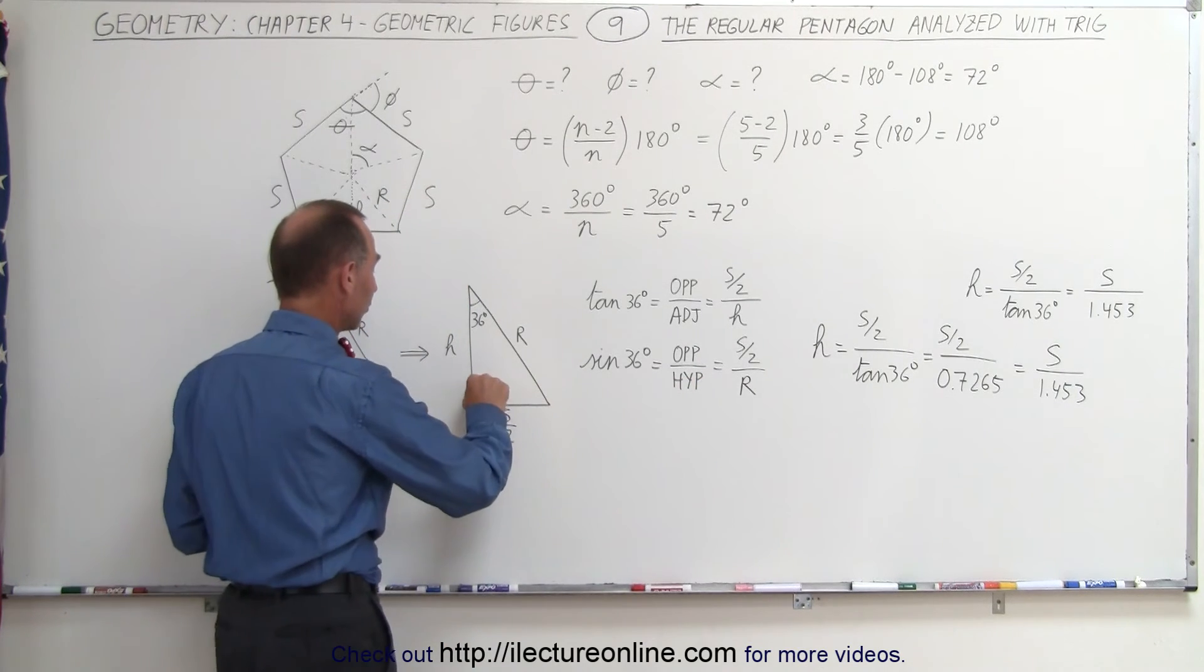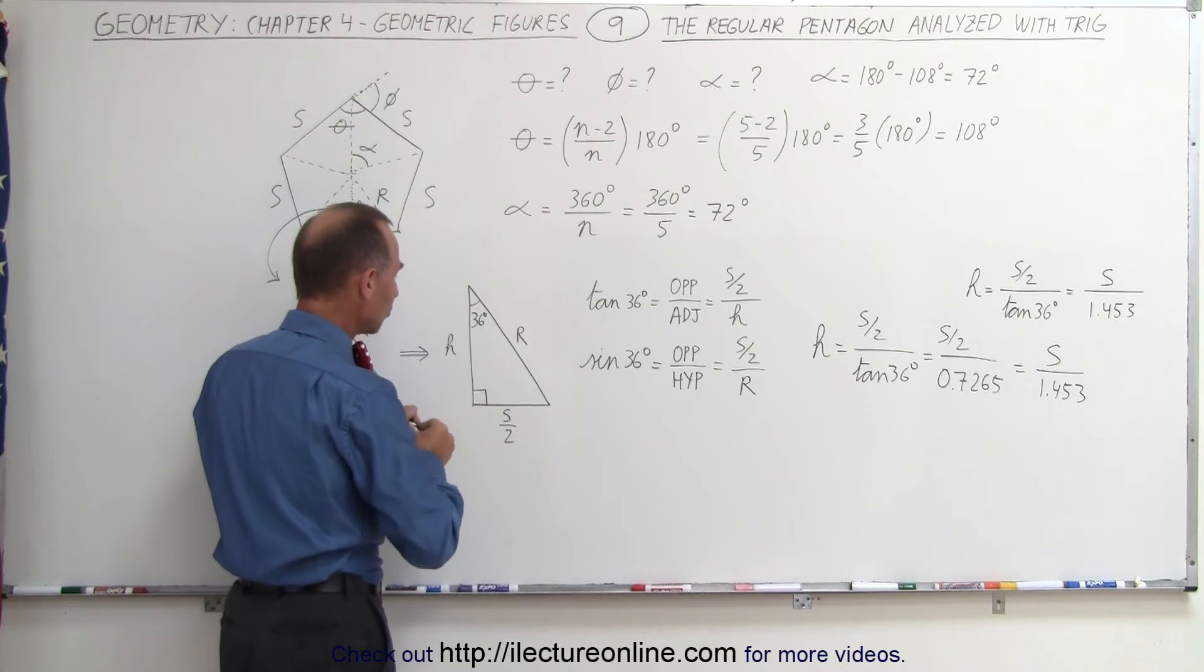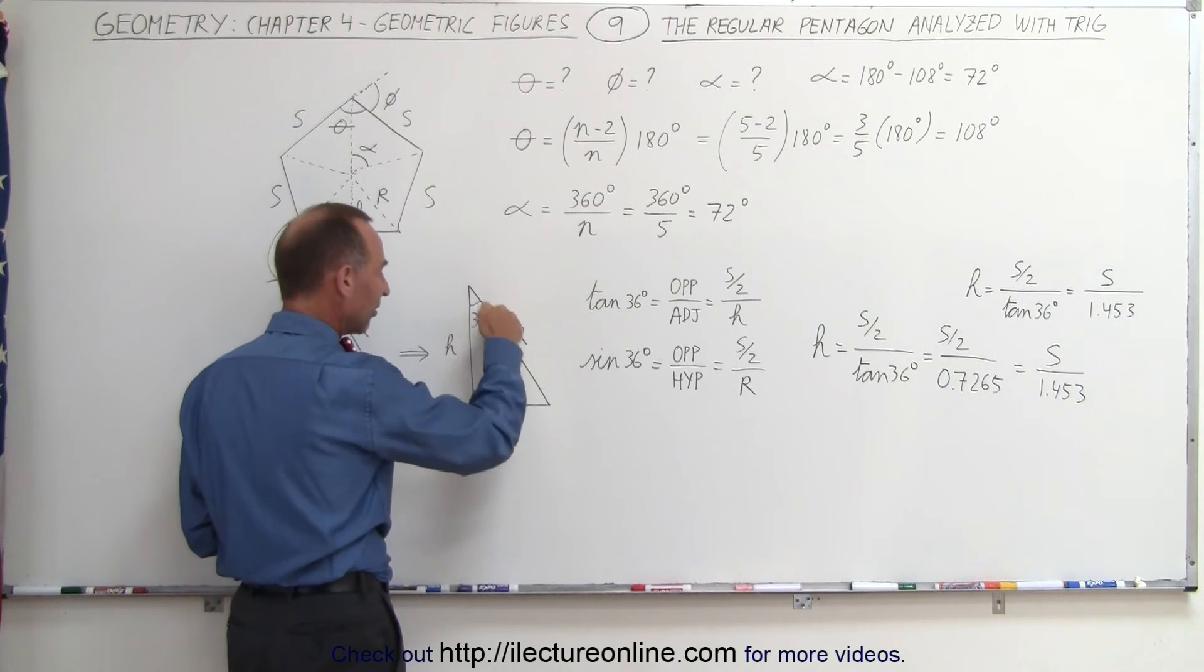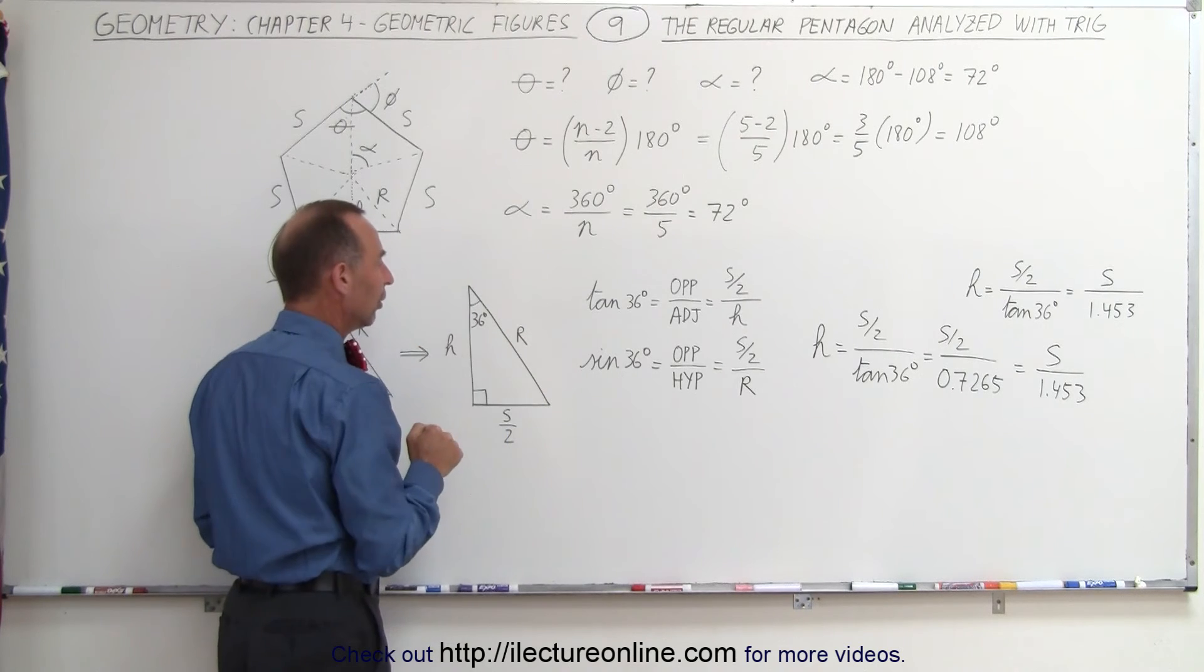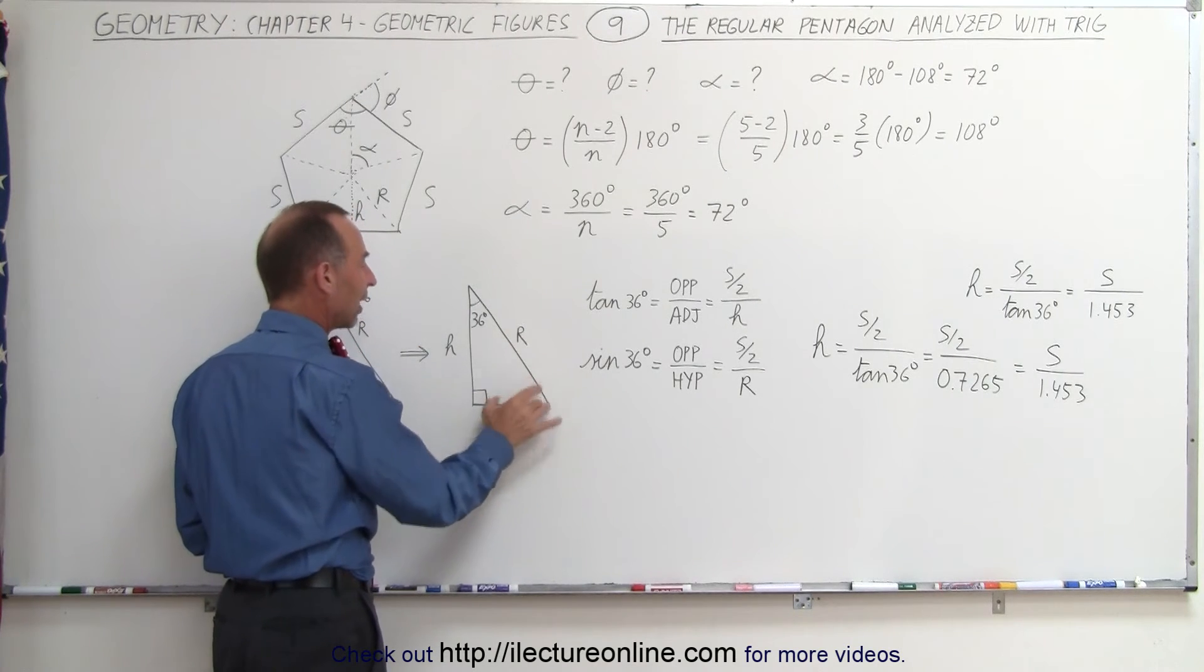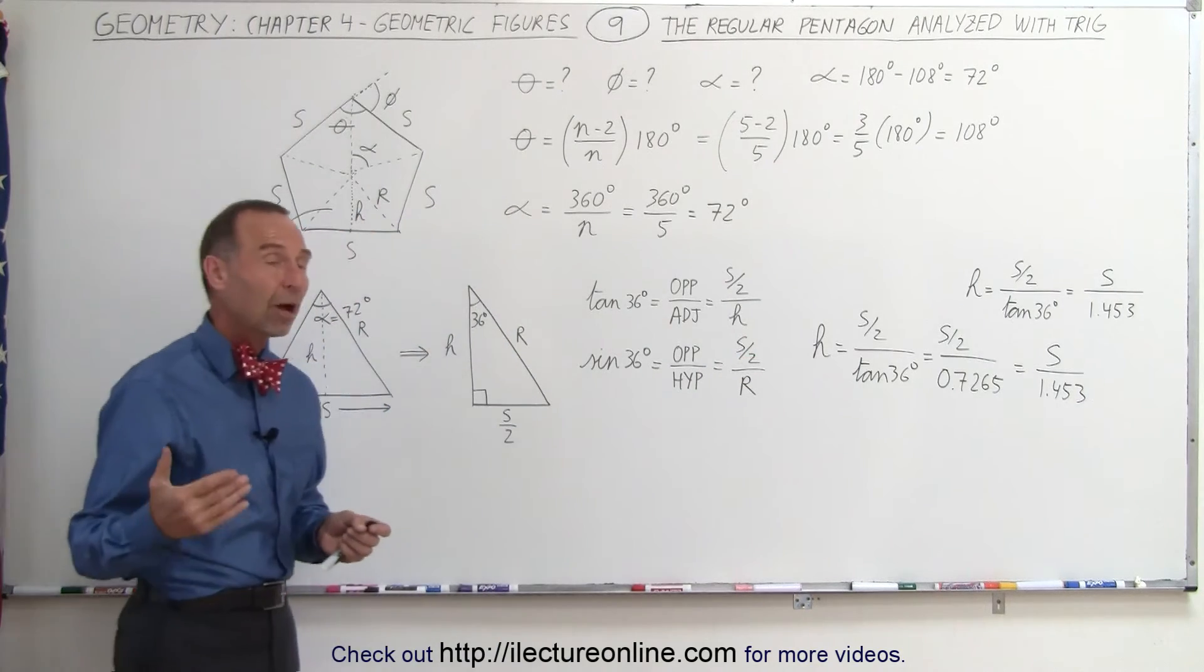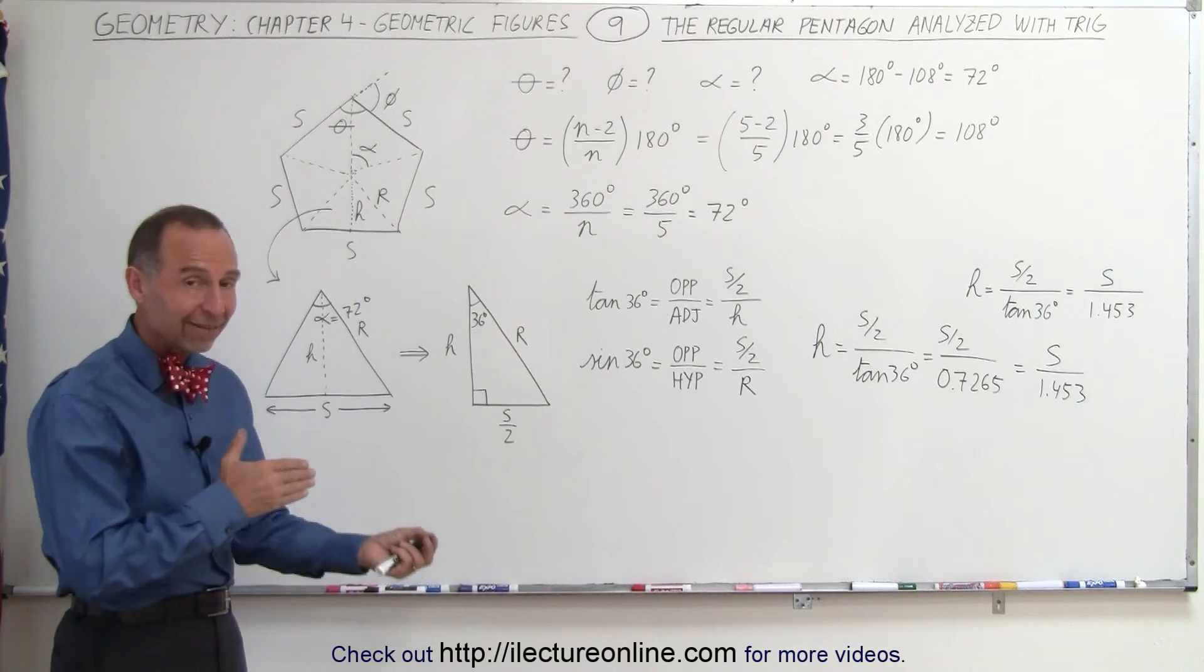You have to have a right angle triangle. So this is a right angle triangle right here, a right triangle. And you can see that this is the opposite side to the angle, and this is the hypotenuse of the triangle. So it's the ratio of the opposite side to the hypotenuse, s over 2 divided by r. And that's how we can find the relation between s and r.